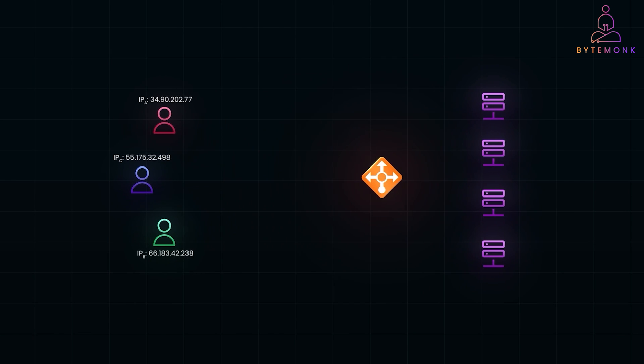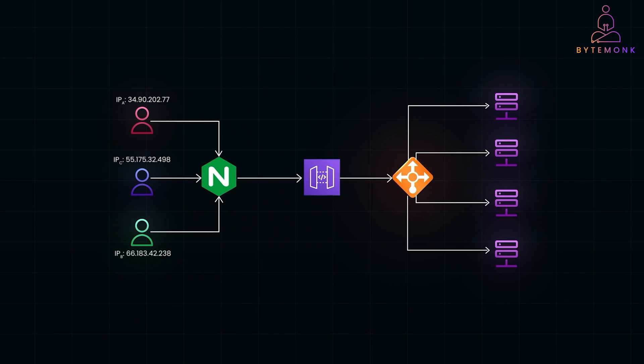Here is how a typical request flows in a modern system. A client sends a request, and Nginx acts as a reverse proxy — the first layer to handle the incoming traffic. It also handles SSL termination and sends the request to an API gateway. The API gateway processes tasks like authentication or request filtering, and passes the request to a load balancer, which routes traffic to the right backend servers.